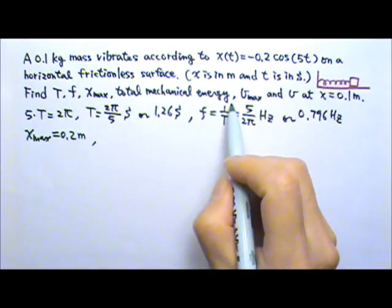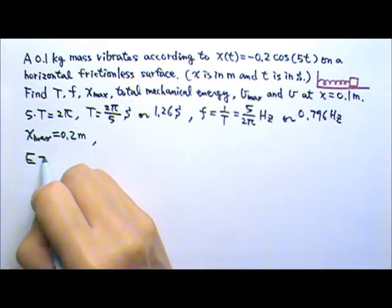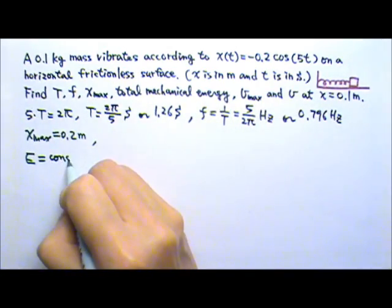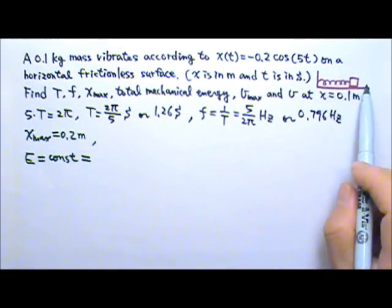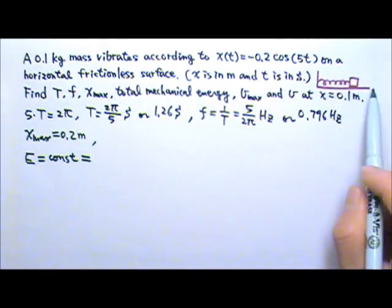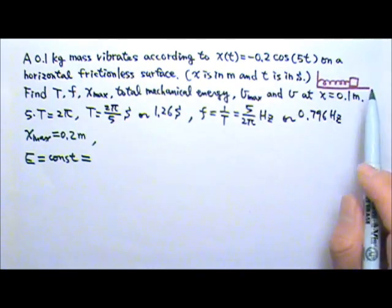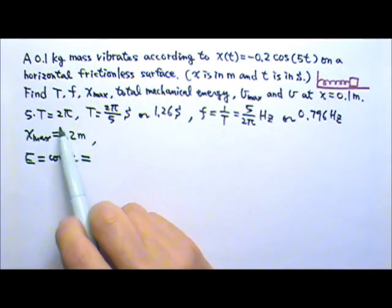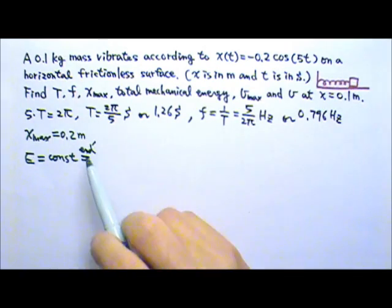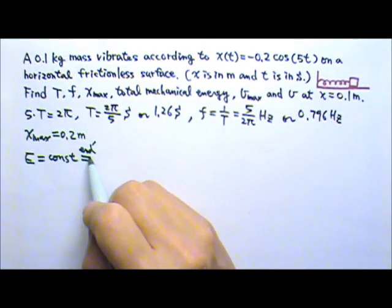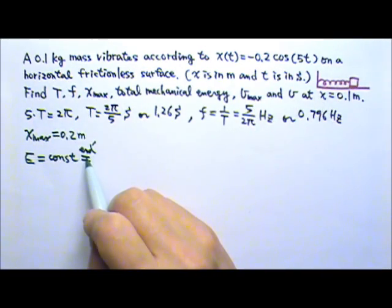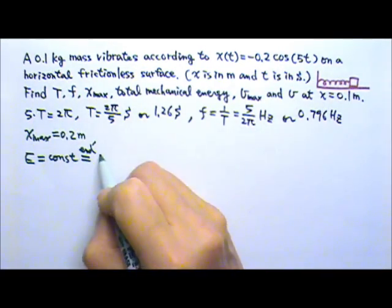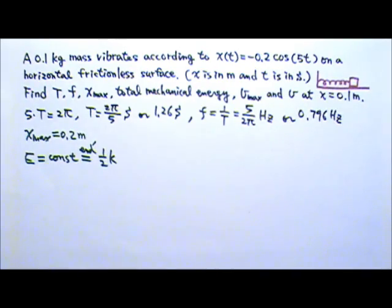For total mechanical energy, the total mechanical energy is a constant during the entire oscillation. So we can use any point of the oscillation to find the total mechanical energy. And in this case, we already know the amplitude, so the end point is probably the most convenient one for us to use. At the end point, it's a turning point, so the speed is 0, no kinetic energy. All of the energy is in potential energy.